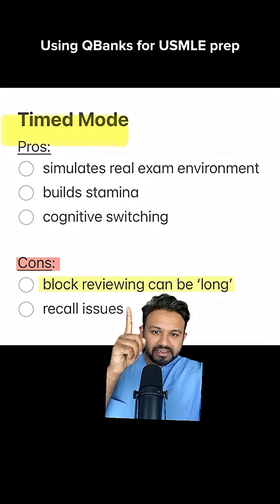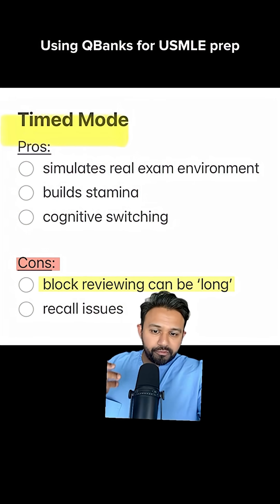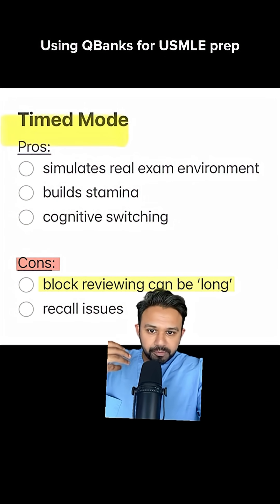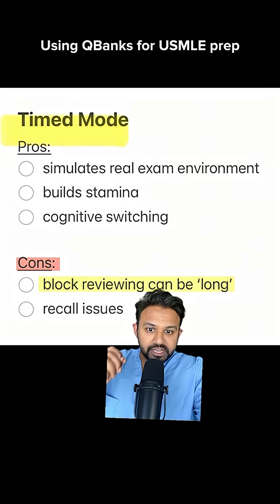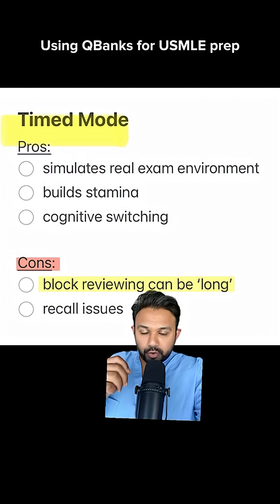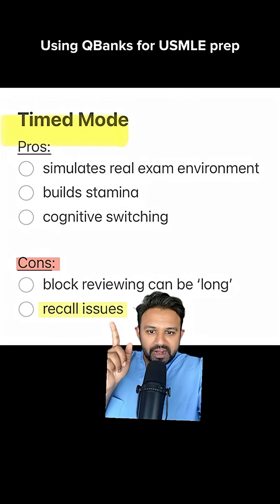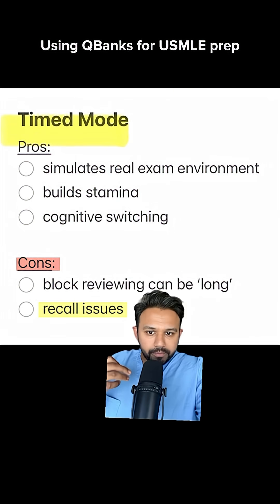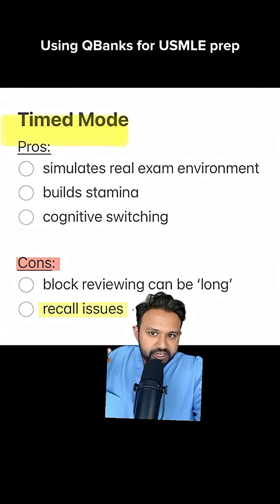Timed mode can take a little longer to review. After a 40-question timed block, you'll be stuck reviewing all 40 questions — but make sure to start with the incorrect ones, because that will get you what you need to learn from the block much quicker. Also, you may not be able to recall as much of your in-the-moment thought process, which was an advantage of tutor mode.